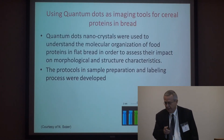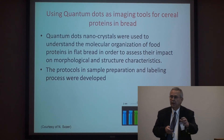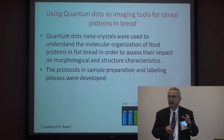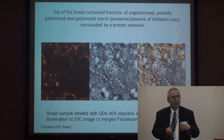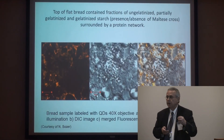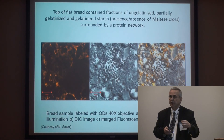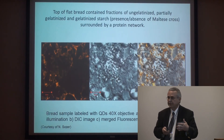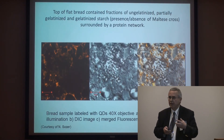Another application is the utilization of quantum dots — conjugating them to antibodies and then finding various proteins within food systems. In this particular example, we are focused on gliadin, the low-molecular-weight protein in dough. We're looking at the distribution of gliadin in dough as a function of processing and also as a function of baking in different food products like bread. This gives us the ability to understand the role of protein distribution in structure formation.